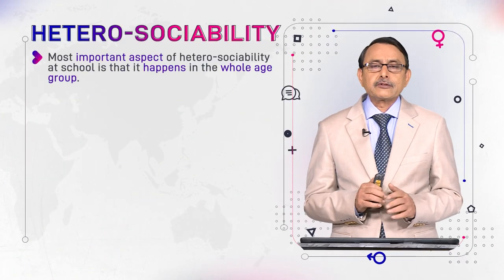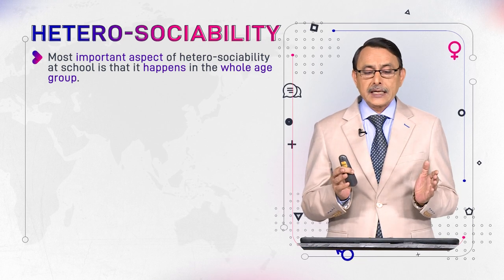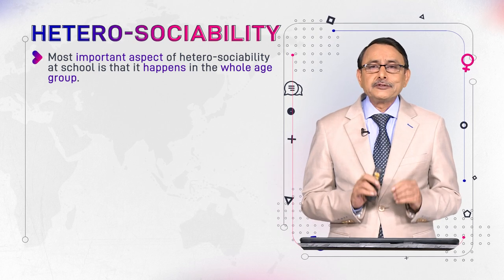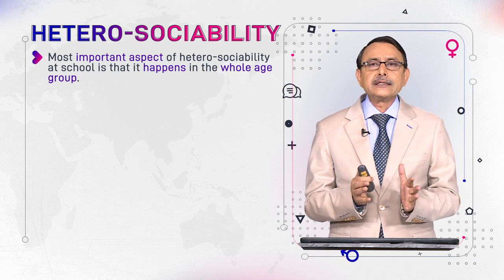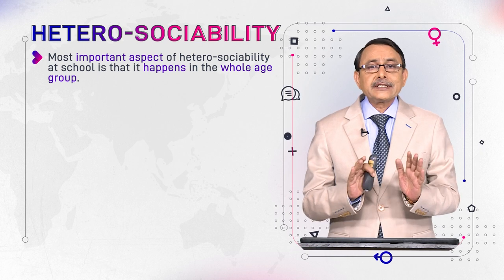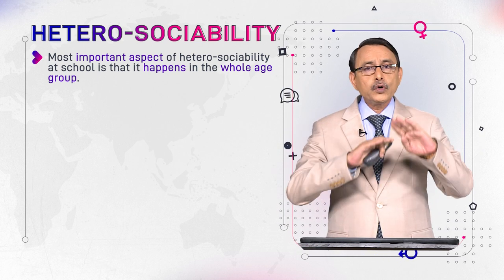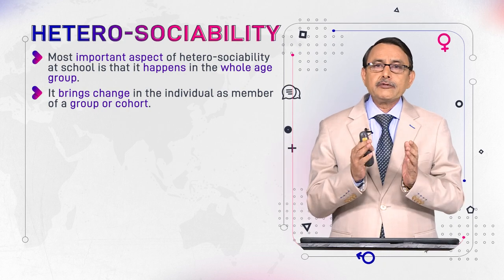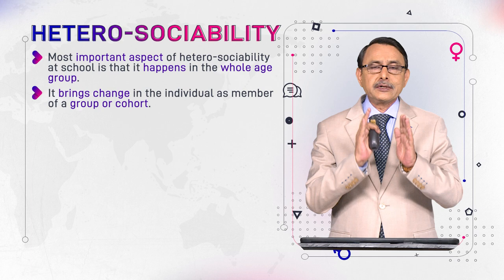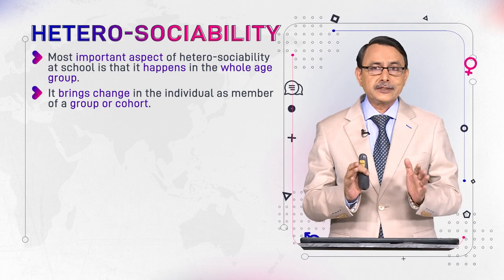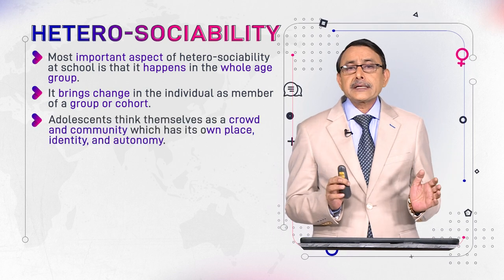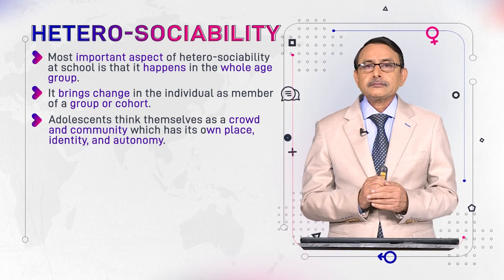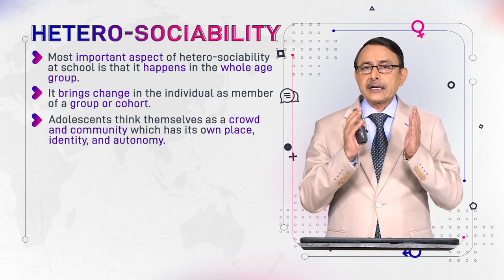The most important aspect of hetero-sociability is that it happens in the whole age group. Heterosexuality may be misunderstood as simply a boy-girl friendship, but it is related to the whole age group. It brings change in the individual as a member of the group — an individual would do what the group would like them to do. Adolescents think of themselves as a crowd, a community, a social group with their own place, identity, and autonomy.